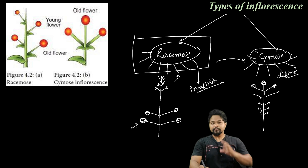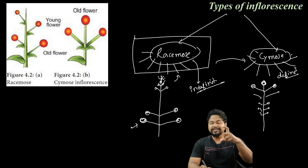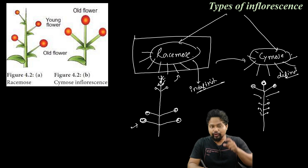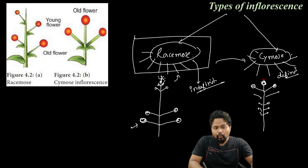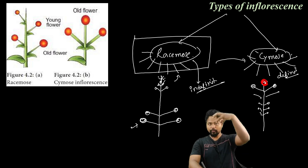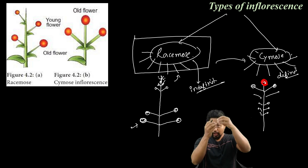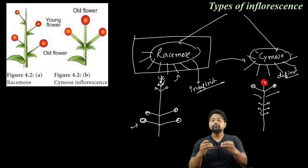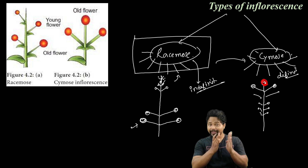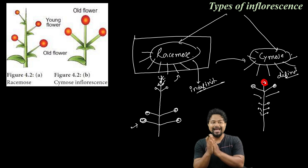Definite means that the growth is limited. The first flower is the older flower. If you have an older flower, you will have the same old flower. So old flower is not at the top; young flower is not at the top.